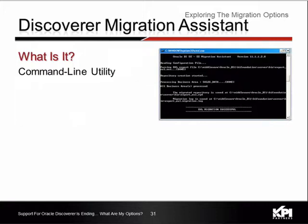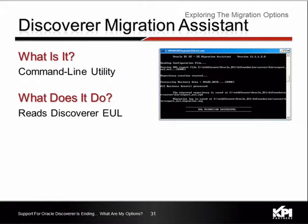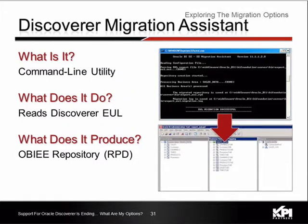What is the Discoverer Migration Assistant? It is a command line utility. It reads your Discoverer EUL and generates an OBIE RPD. It has a number of configuration options you can use to tweak the model that you generate, and in most cases it will take multiple iterations to get it right. We've found that the utility works much better if your Discoverer data model is a star schema than if it is a more complex schema like Oracle EBS.